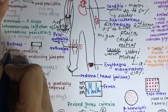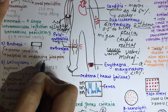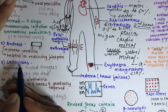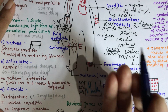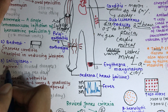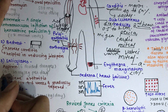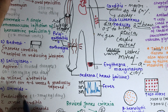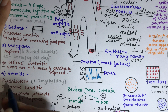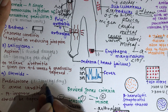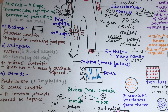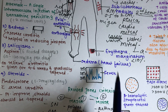Bed rest is recommended for patients with severe carditis and also helps reduce joint pain. Salicylates — aspirin — are given to relieve arthritis at a dose of 60 to 120 mg per kg per day for four to six weeks, then gradually tapered. Steroids such as prednisolone are given at 1 to 2 mg per kg daily for severe carditis and should also be tapered as the patient improves.